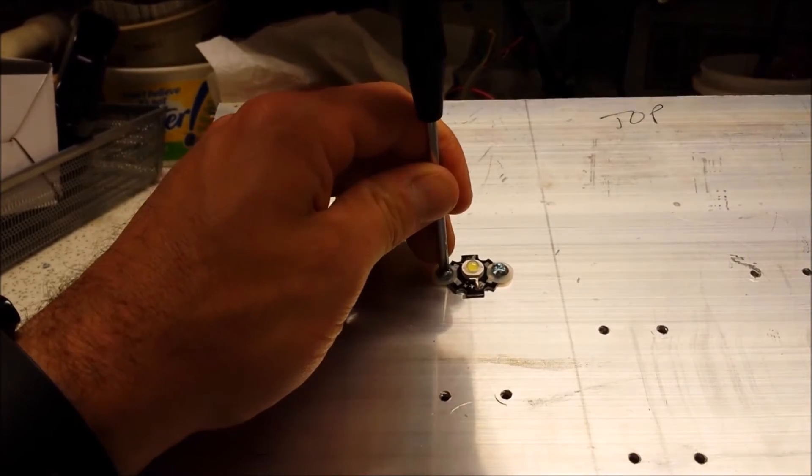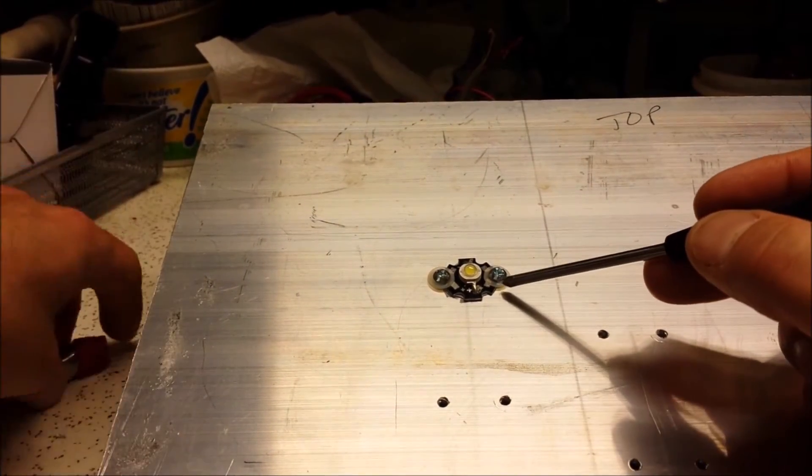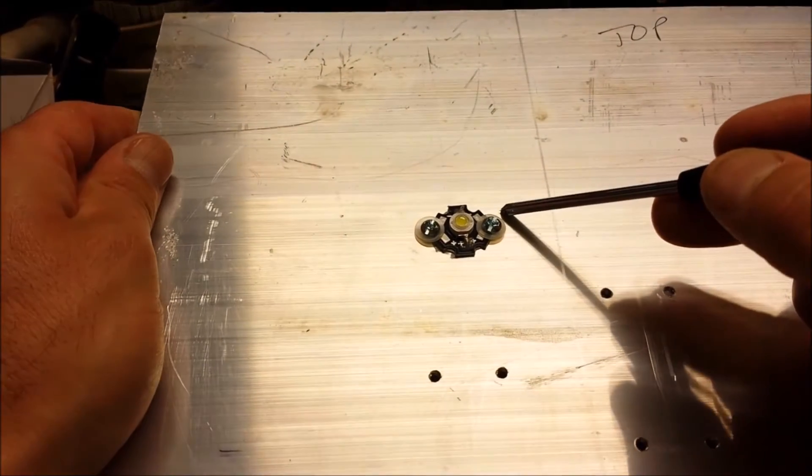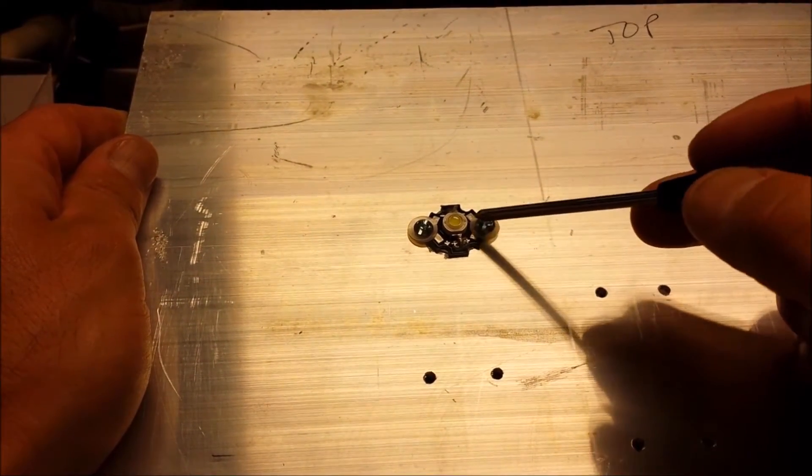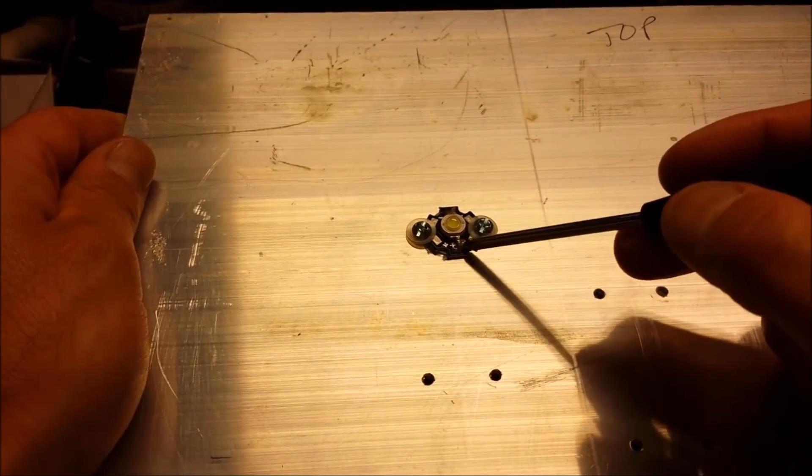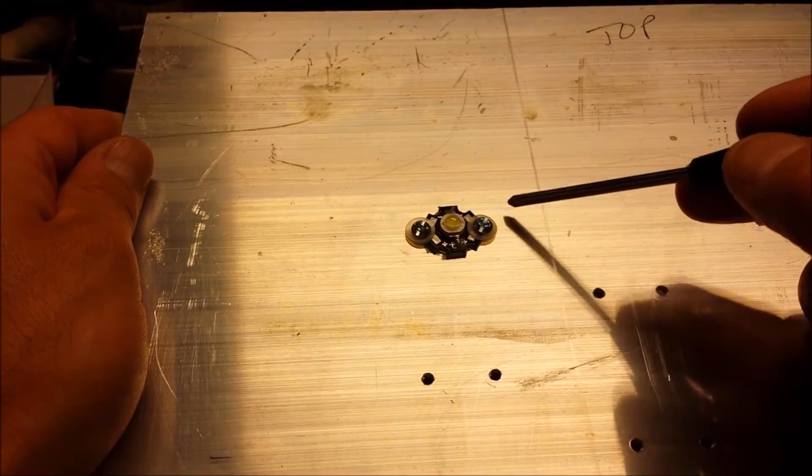And then we can tighten it down. And I just realized I think I got these washers that are a little too big, but that's okay. They still protect the head from shortening these out, and it will allow me to solder a wire on without shortening them.